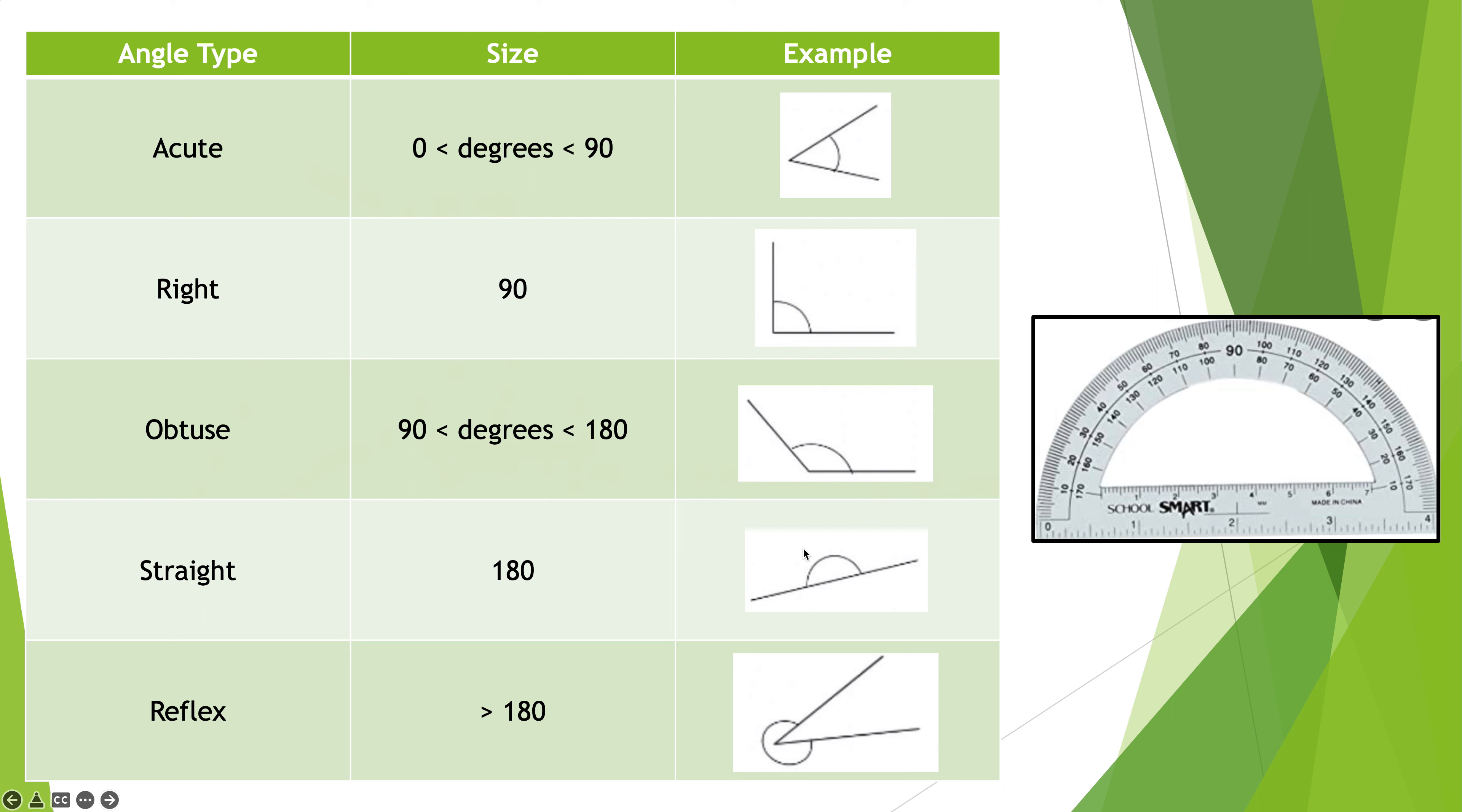Acute: zero to 90, right is 90, and obtuse is 90 to 180. Now a straight angle is a perfectly straight line and that is 180 degrees. It's a half a circle. Very important measurement right there. 90 is very important, so is 180.